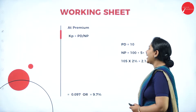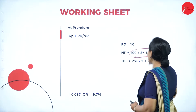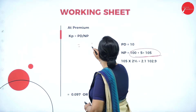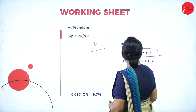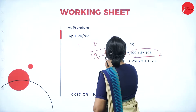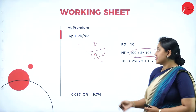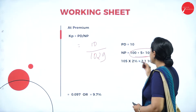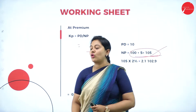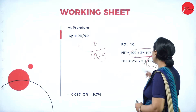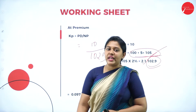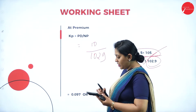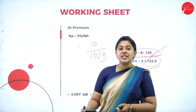For issued at premium, only the premium value changes; rest remains the same. Preferential dividend is Rs. 10. Net proceeds will be 102.9, deducting all the transaction cost. 100 into 5% is Rs. 105, and the transaction cost is 2%, which is Rs. 2.1. So 102.9 is the net proceeds. Substituting the answer: 10 divided by 102.9 gives 9.7%.